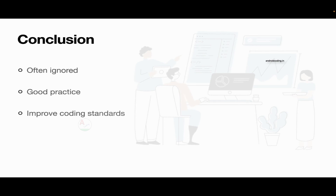Unit testing will make you aware of errors in your code and will also improve your coding standards. Whenever a new feature is added to existing code there might be bugs arising — you can easily identify those bugs before making the app live or passing it to the further testing team. It will improve code standards and help you understand exactly where your application is going wrong. It makes it easy for you to monitor your code. For example, to test the login functionality you can tap a single button and test the entire login flow, and find issues in that component.